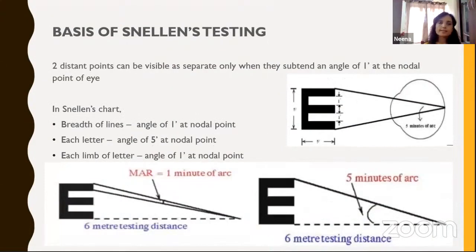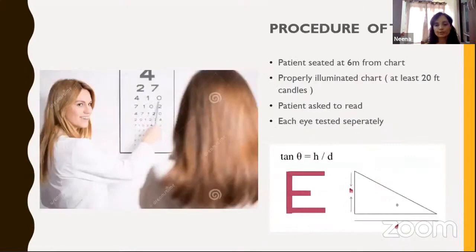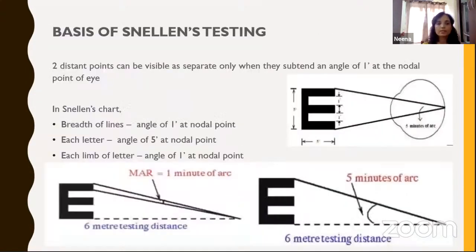What is the basis of Snellen's testing? It is based on the understanding that two distant points can be visible as separate only when they subtend an angle of one minute at the nodal point of the eye. The entire letter subtends an angle of five minutes, and each limb and breadth of the line will subtend an angle of one minute at the nodal point if tested at a distance of six meters.